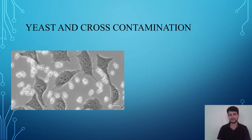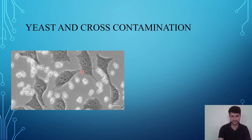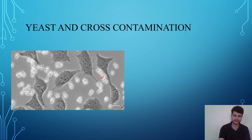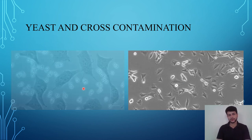If there is yeast contamination, yeast looks like these budding particles. If you see these buds or particles you have to discard your cells. Bacterial and fungal contamination are very easy to identify by eye because the media looks very messy. With yeast contamination, sometimes a person may confuse them with cells that have not yet adhered to the plate, but if you see them as buds it is definitely yeast contamination.